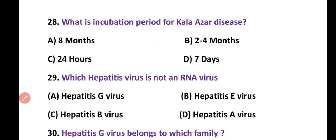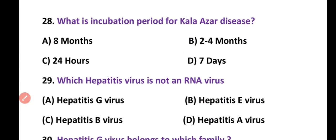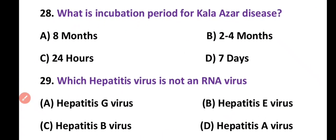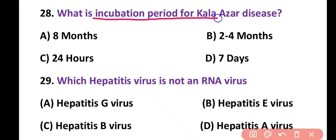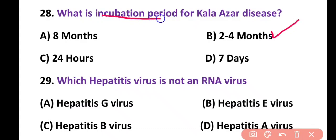Question 28. What is the incubation period for Kala-azar disease? 8 months, 2 to 4 months, or 24 to 7 days? Correct answer is option B. 2 to 4 months is the incubation period for Kala-azar disease.